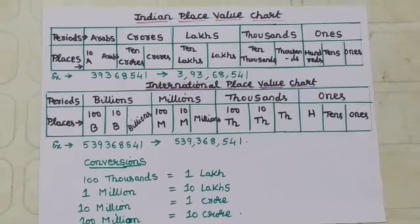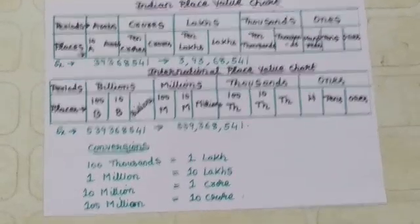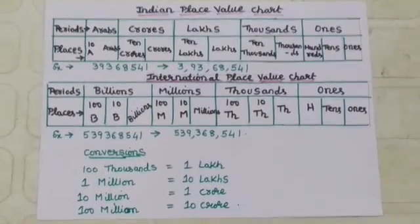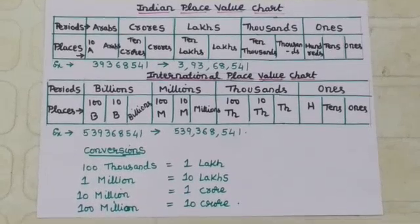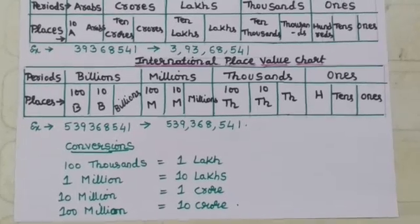Similarly, we will move on to international place value chart. Here, the periods are ones, thousands, millions, and billions. The places in ones are ones, tens, and hundreds.